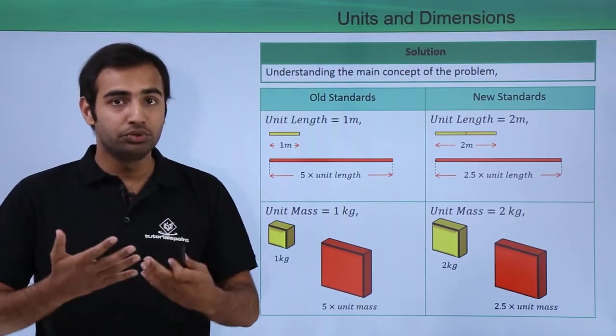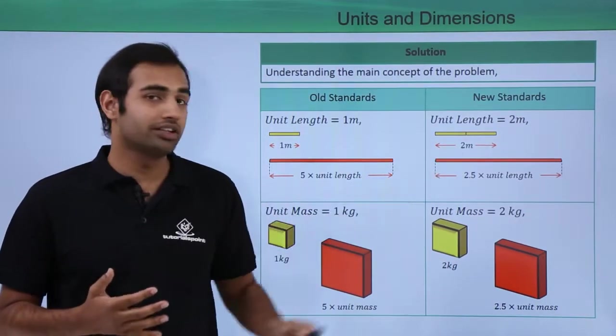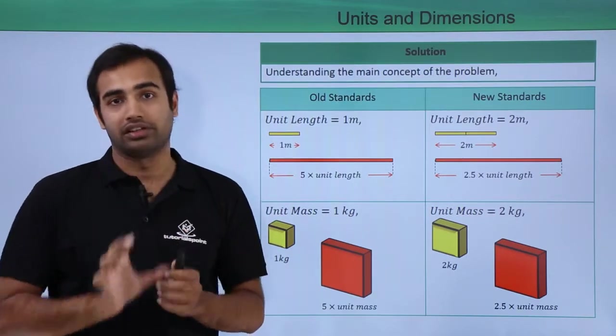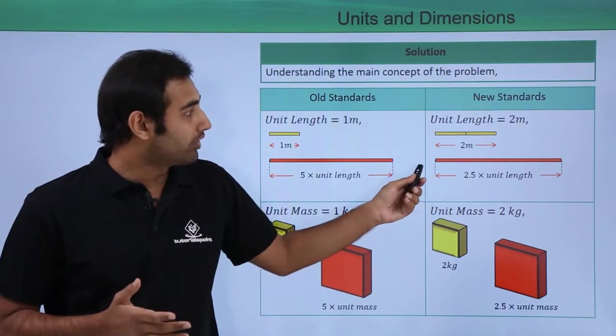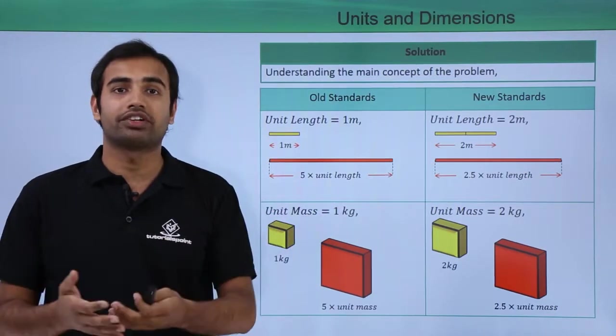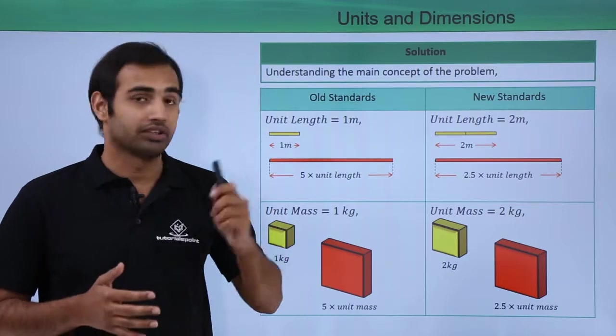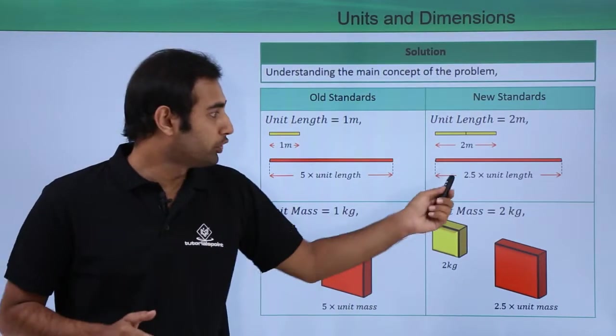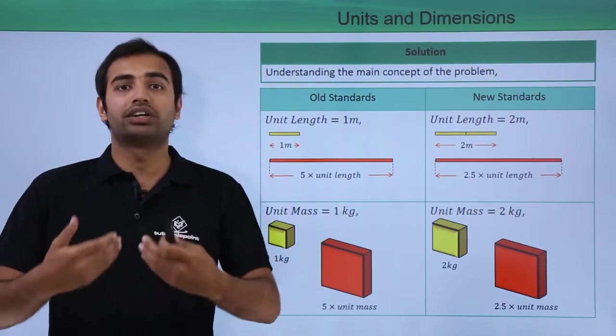However, if I define my new standards, taking 2 meters of length as my most fundamental length. So over here, if I have to measure the same red rod's length, I will say that this red rod is 2.5 times my new standard meter. So the length will come out to be 2.5 into the new unit length that I have defined.